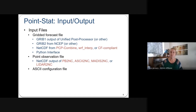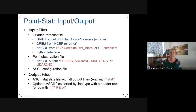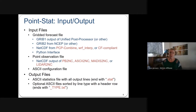For point observations, PointStat reads NetCDF files written by PB2NC and ASCII2NC, as well as output from preprocessing tools like Matus2NC and LiDAR2NC, and the Python interface. PointStat has an ASCII configuration file to define how you want to run verification. Output files are either in a .stat file or optionally sorted ASCII files by line type, written with an appendage of the line type as .txt.